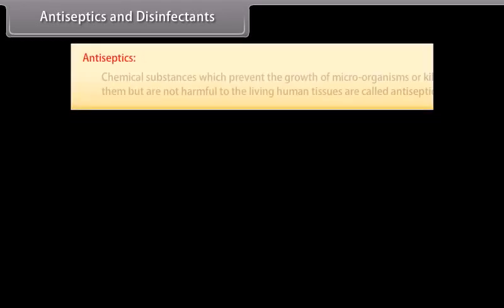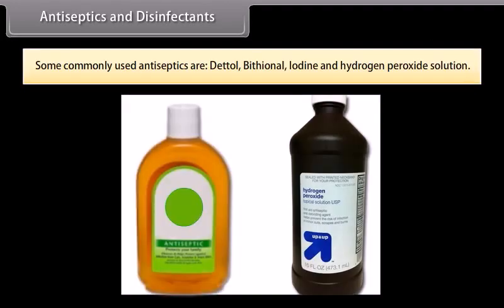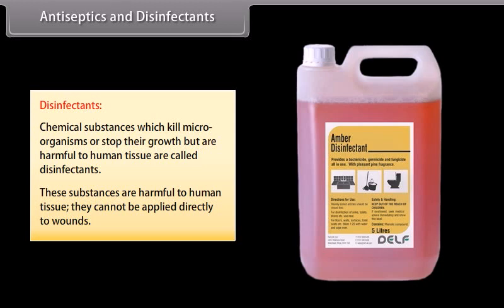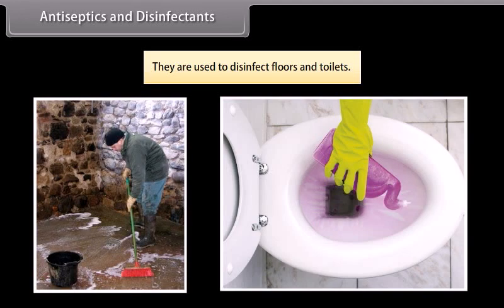Antiseptics and Disinfectants: Antiseptics are chemical substances which prevent the growth of microorganisms or kill them but are not harmful to living human tissues. Antiseptics are applied to living tissues — to wounds, ulcers and diseased skin surfaces. Some commonly used antiseptics are Dettol, Bithionol, iodine and hydrogen peroxide solution. Disinfectants are chemical substances which kill microorganisms or stop their growth but are harmful to human tissues. They cannot be applied directly to wounds and are used to disinfect floors and toilets. For example, phenol, sulfur dioxide and chlorine.